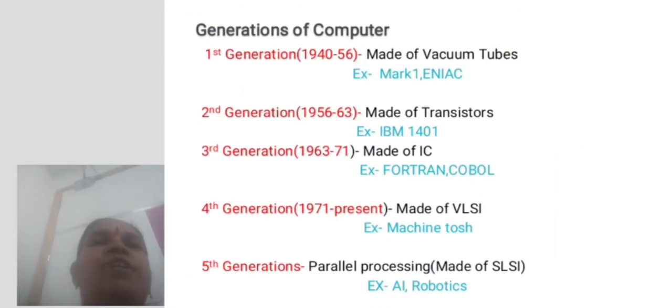Generation of Computer: First generation made up of vacuum tubes. Second generation computer made up of transistor. Third generation computer made up of IC. Fourth generation computer made up of VLSI. Fifth generation of computer is parallel processing.